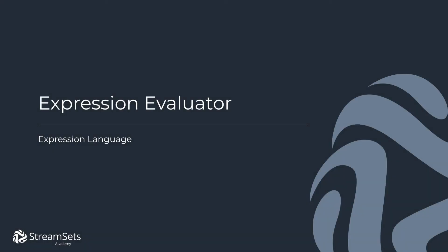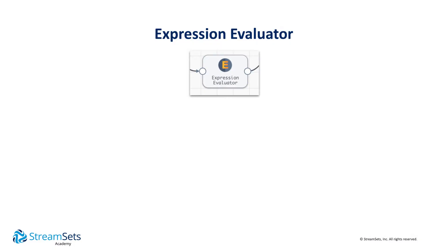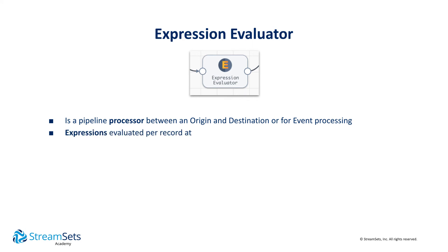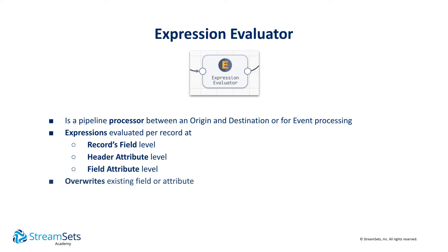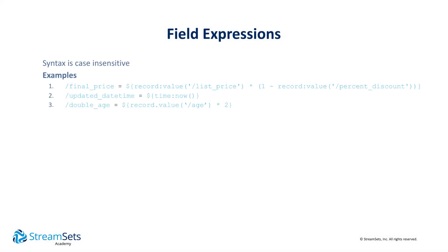The Expression Evaluator is a powerful pipeline processor that can be used to evaluate expressions for record fields and attributes. It is commonly used for overwriting existing values or enriching records by creating entirely new fields and attributes. Here are some examples of field and attribute expressions.